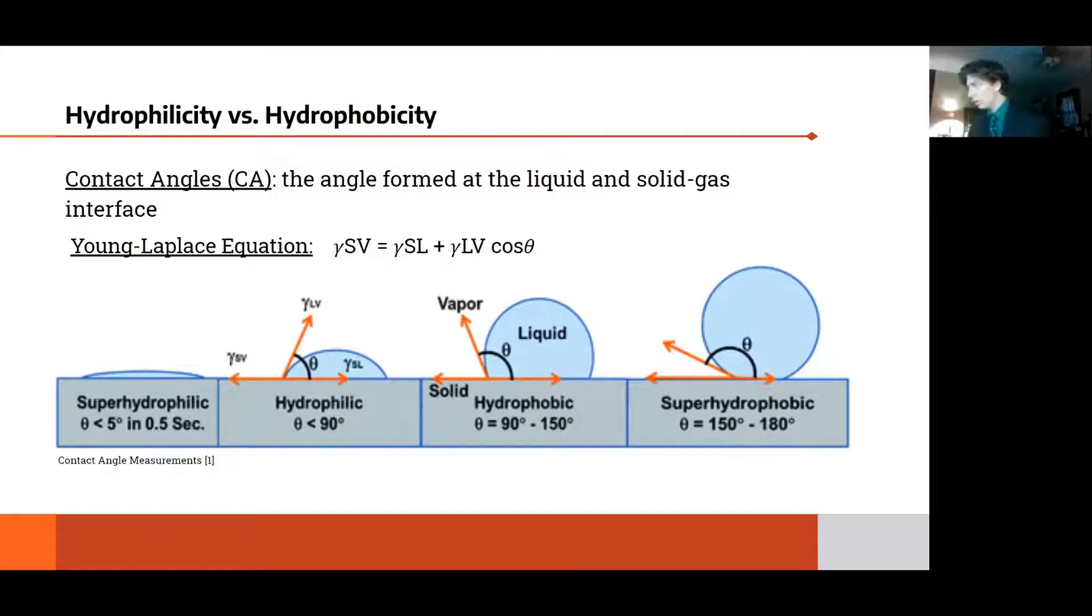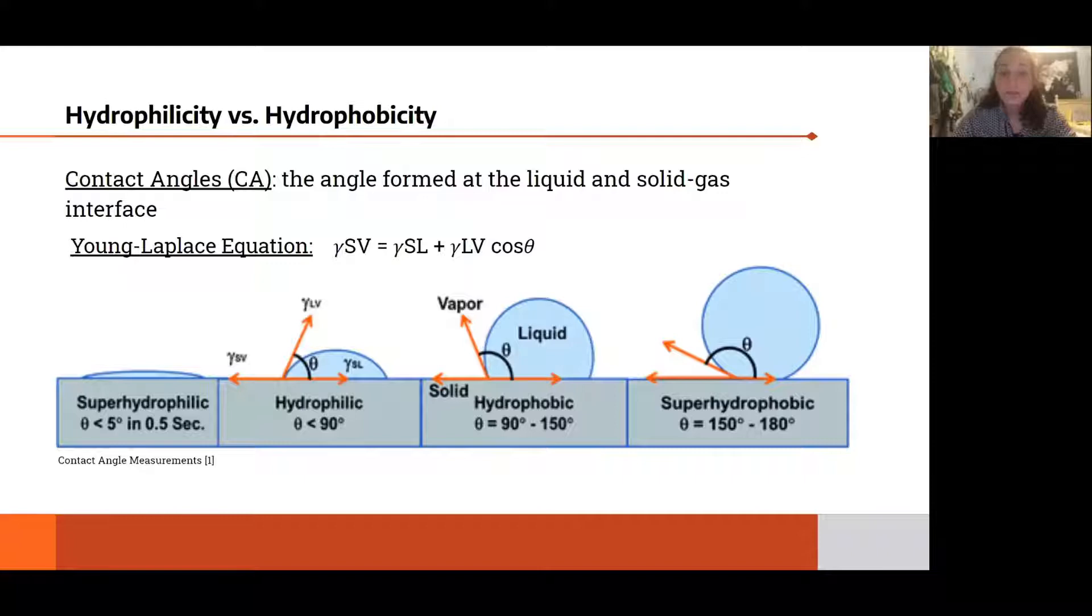Surface science is a study of interactions between two surfaces with different physical or chemical properties. The interactions occur between any of the states of matter: solid, liquid, or gas. For our experiment, we studied the interactions between the liquid and solid layer.